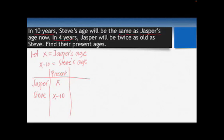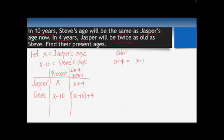In 4 more years, we add 4 to each age: Jasper becomes x + 4 and Steve becomes (x − 10) + 4. The problem states that in 4 years Jasper will be twice as old as Steve. So the equation is: x + 4 = 2(x − 10 + 4), which simplifies to x + 4 = 2(x − 6).